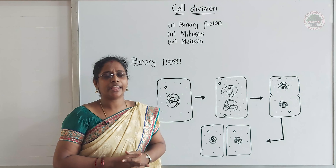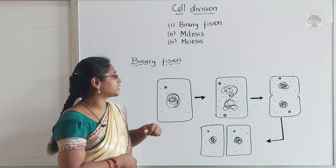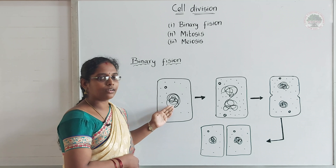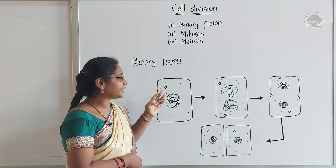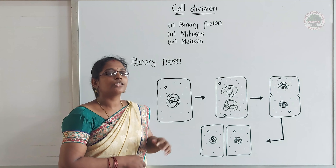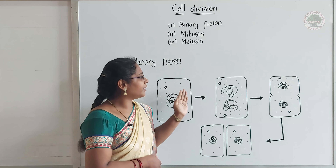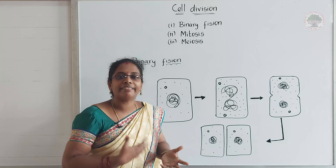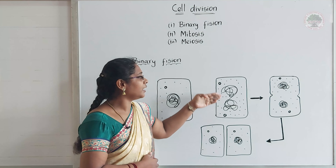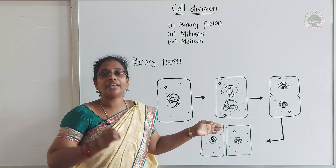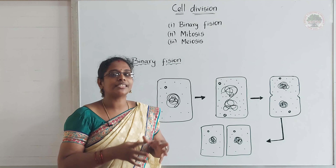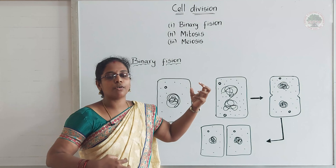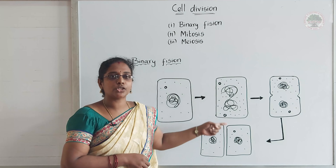What actually happens in a bacterium's body during binary fission? In the body of bacteria, you can see the nuclear matter — DNA or RNA — then centrioles are present, and also ribosomes. During binary fission, this DNA matter starts to replicate, which means it copies itself. Not only the DNA but also the centrioles replicate. Centrioles are very important for cell division because they are the cell organelles that pull the nuclear matter to the opposite ends of the cell.